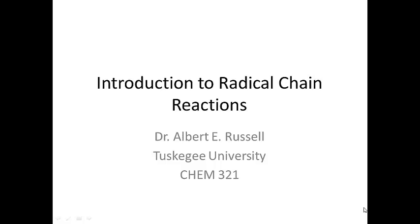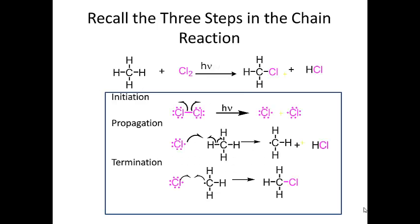In this video we're going to talk about radical chain reactions, with the main focus coming towards the end on how to determine the percent yield or product distribution for a radical chain reaction on a carbon chain that's more than two carbons. Every radical chain reaction undergoes three steps in the mechanism: initiation, propagation, and termination. This reaction is a radical substitution of methane with chlorine, done in the presence of light to cause initiation.